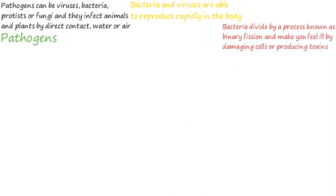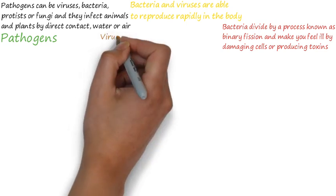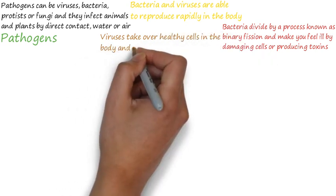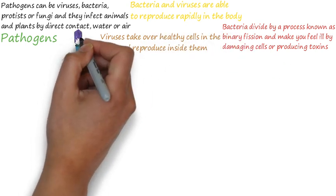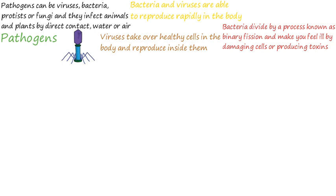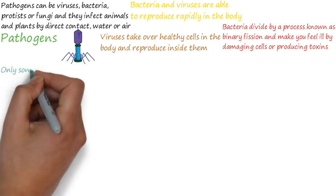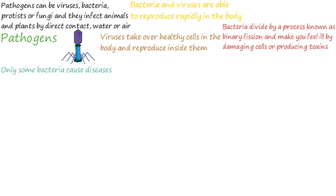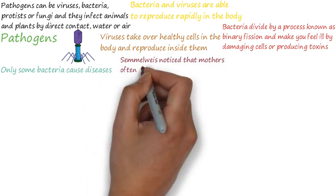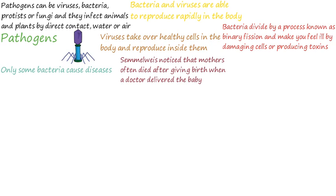Bacteria and viruses are the most common pathogens and are able to reproduce rapidly inside the body. Bacteria divide by a process known as binary fission and make you feel ill by damaging cells or producing toxins. Viruses take over healthy cells and reproduce inside them, damaging those cells. Only some bacteria cause diseases; some are used in food and medicine. Viruses and fungi are most common in plants.